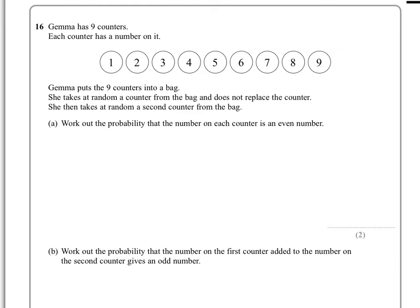In question 16 we're told that Gemma has 9 counters, each with the number 1 to 9 on it. And we're told that she puts those counters in a bag and takes one out at random and doesn't replace it. And then she takes a second one.